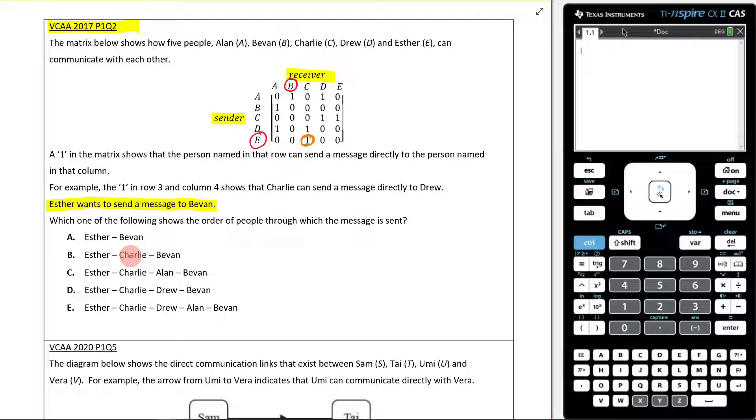Let's look here - that immediately takes out option A because Esther can't send directly to Bevan. Esther can send to Charlie. These are all still in play. We then go to Charlie - well, who can Charlie send the message to? Charlie can either send it to Drew or Esther. If we look up here, well he can't send it to Bevan, so that's B out. Charlie also can't send it to Alan, there's a zero there, that's that one out.